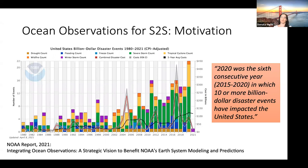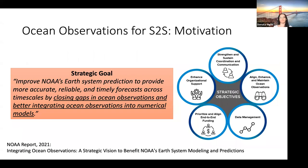One thing the NOAA report points out is that 2020 was the sixth consecutive year in which 10 or more billion-dollar disaster events impacted the United States. NOAA describes the strategic goal to improve NOAA earth system prediction to provide more accurate, reliable, and timely forecasts across time scales. To do this, they highlighted the focus of closing gaps in ocean observations and also better integrating the available ocean observations into numerical models. You can see how aligning, enhancing, and maintaining ocean observation is one of the key points in this schematic.